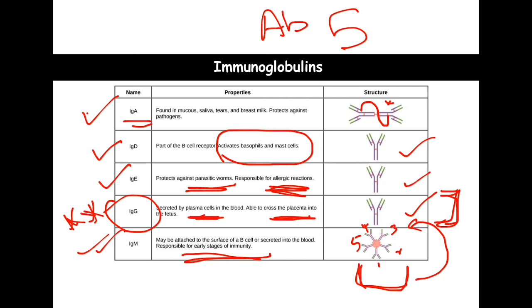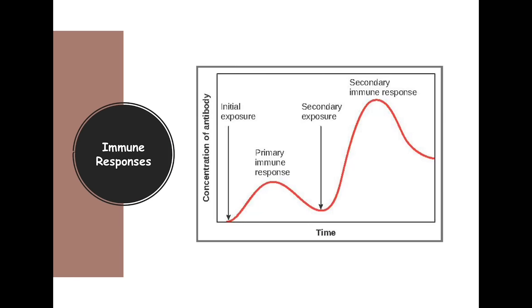How does this apply clinically? If someone got sick and went to the hospital very ill, and they check antibody levels and see high levels of IgM, they know it's a more recent infection. But if they don't see IgM and see a lot more IgG, that indicates the infection has been going on for a little longer. So to recap, we have IgA, IgD, IgE, IgG, and IgM.